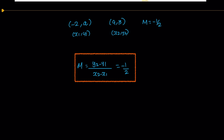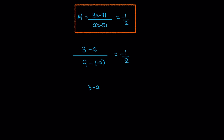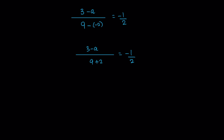Replacing the corresponding values: 3 minus A divided by 9 minus (minus 2) equals minus 1 by 2. So 9 minus of minus is positive, giving 9 plus 2. Therefore 3 minus A divided by 11 equals minus 1 by 2.